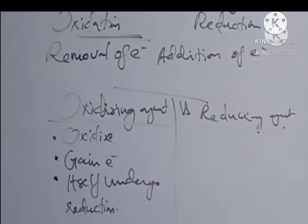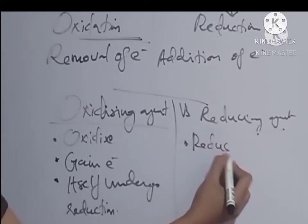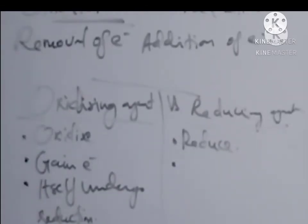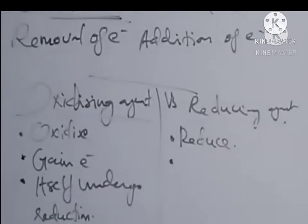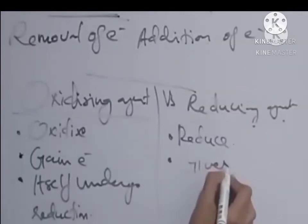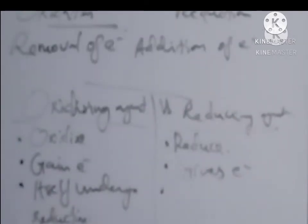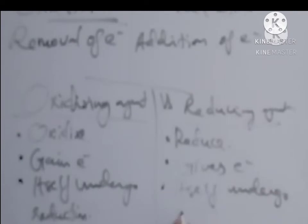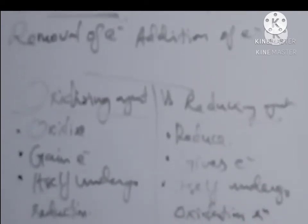In the case of reducing agents, reducing agents are substances which reduce another reactant participating in the redox reaction. Reducing another substance means it gives electrons to that substance. So the reducing substance itself undergoes oxidation.